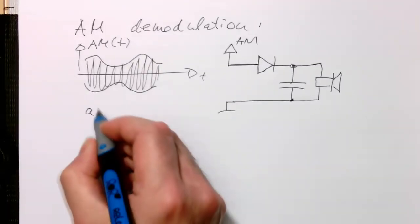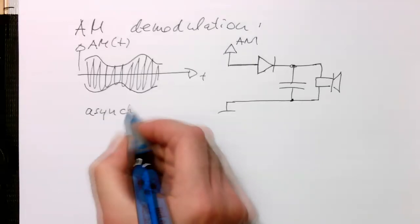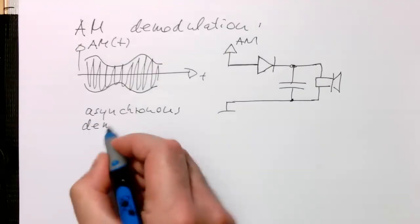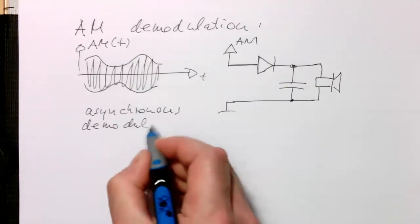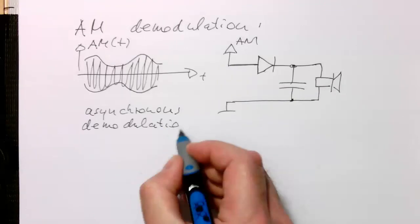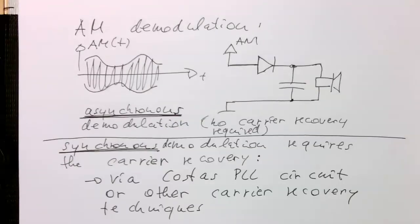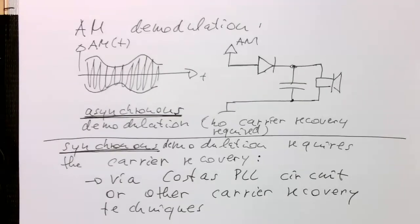So just write this down here again. This is called asynchronous demodulation. We don't need the carrier. Then let's add our synchronous demodulation, which requires the carrier. And obviously because of that, ways of recovering the carrier.